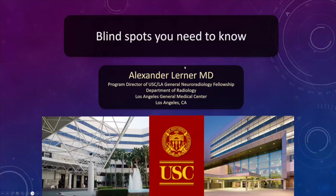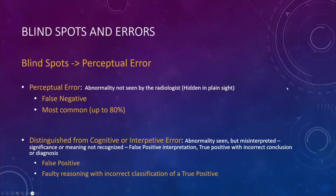The subject is blind spots that we all need to know when we are interpreting brain imaging, particularly on MRI and CT. We routinely do M&M conferences and try to figure out which cases we miss or where we make errors. It's always a challenge because we have busy schedules and have to look at a lot of studies, but it's very important to have a systematic approach to try to avoid errors and figure out where the misses occur.